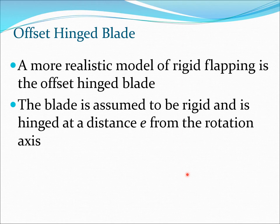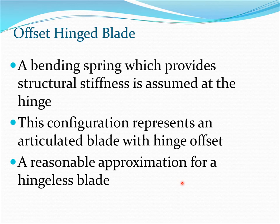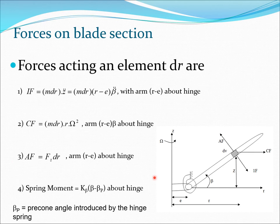This model of rigid flapping is a better model than one which presumes the hinge to be at the root, because most actual helicopters have an offset hinge located at a distance e from the axis of rotation. The bending spring provides structural stiffness and is presumed to be at the hinge. This configuration of a hinged plate with a root spring can be a good model for an articulated rotor with an offset hinge, and also a reasonably good model for a hingeless rotor blade.